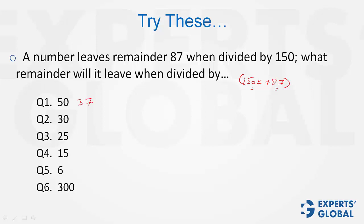With 30, 150K will give 0, 87 will give 27. So the answer is 27. With 25, 150K will give 0, 87 will give 12. So the answer is 12.